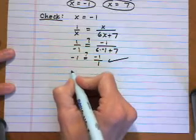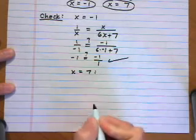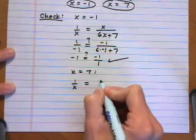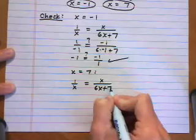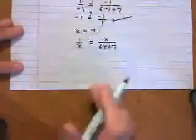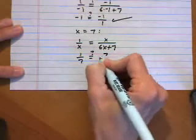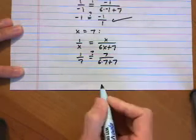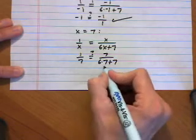Then we also want to check x equals 7. Putting that into the original equation 1 over x equals x over 6x plus 7, we plug in 7: does 1 over 7 equal 7 over 6 times 7 plus 7? That's 42 plus 7 which is 49.